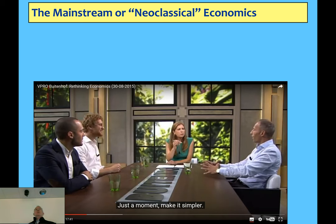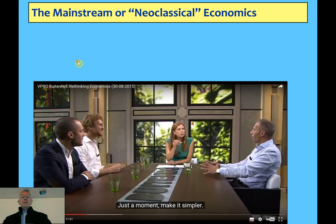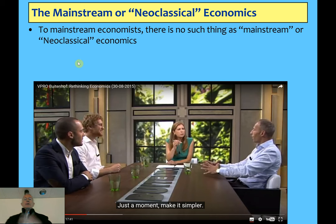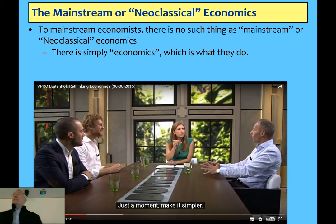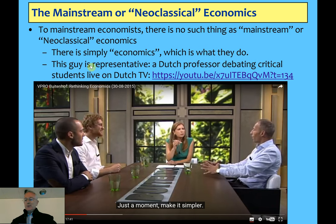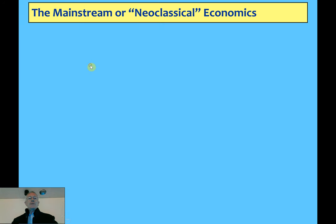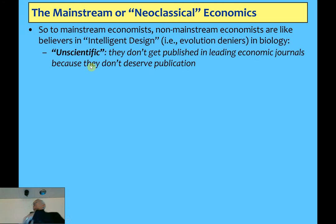He basically thinks all the opposing schools are like climate sceptics or people who believe in intelligent design rather than evolution. And that's fairly typical of the mainstream — they don't actually think there's anything other than the mainstream. That tends to be the position, but they're starting to change on that front. So to them, it's just economics — just like you've done in your textbooks. And that's why to the mainstream, the other schools are unscientific. They don't get published in leading journals because they don't deserve to get published.